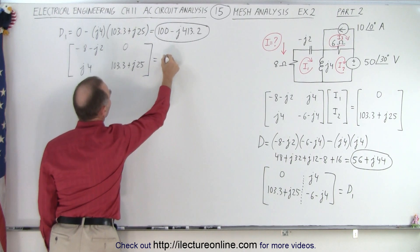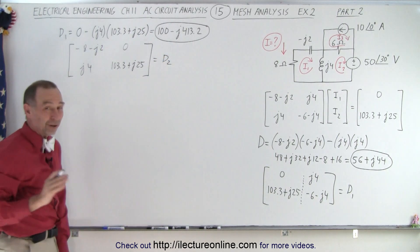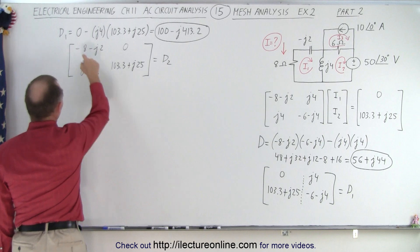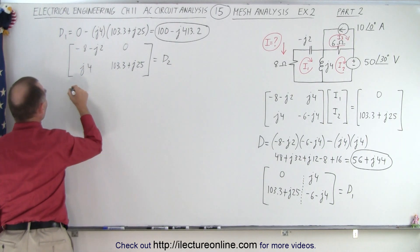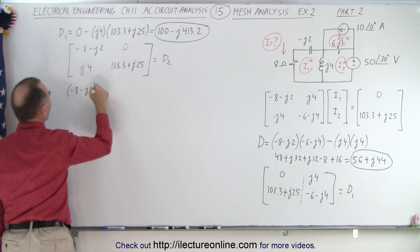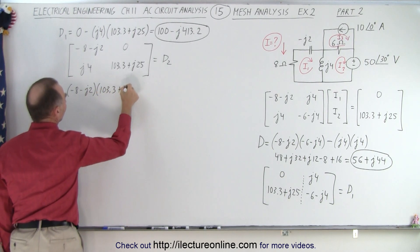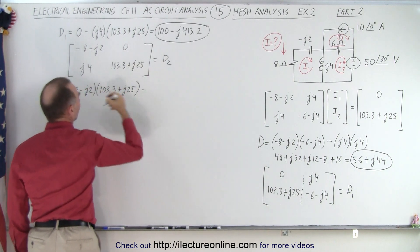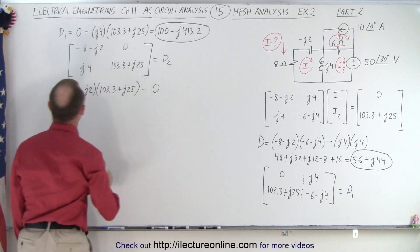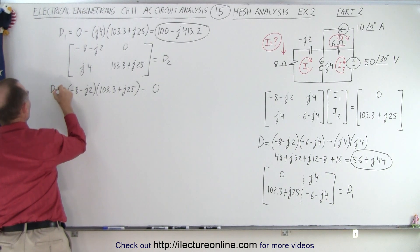This and that will now equal D2. So let's go ahead and work that out. So now we have to multiply this times this. So we end up with minus 8, minus J2, multiplied times 103.3 plus J25, minus the product of those two, which is simply 0.